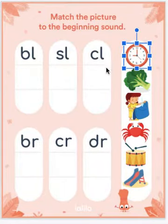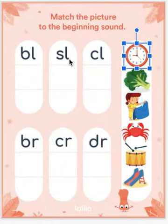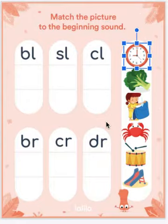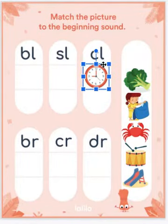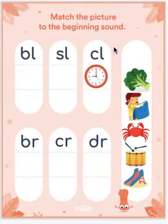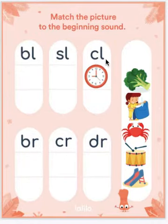What sounds do you hear at the beginning of clock? Is it BL, SL, or CL? Touch where you think the clock should go. Here's where our clock goes — CL-lock. If we pound this out, we would say C-L. So those first two sounds are C-L. That's our consonant blend.